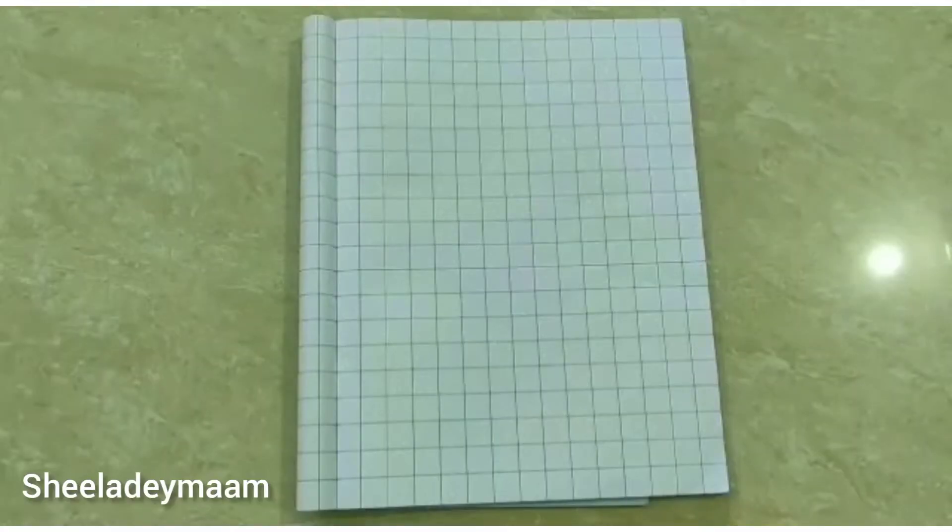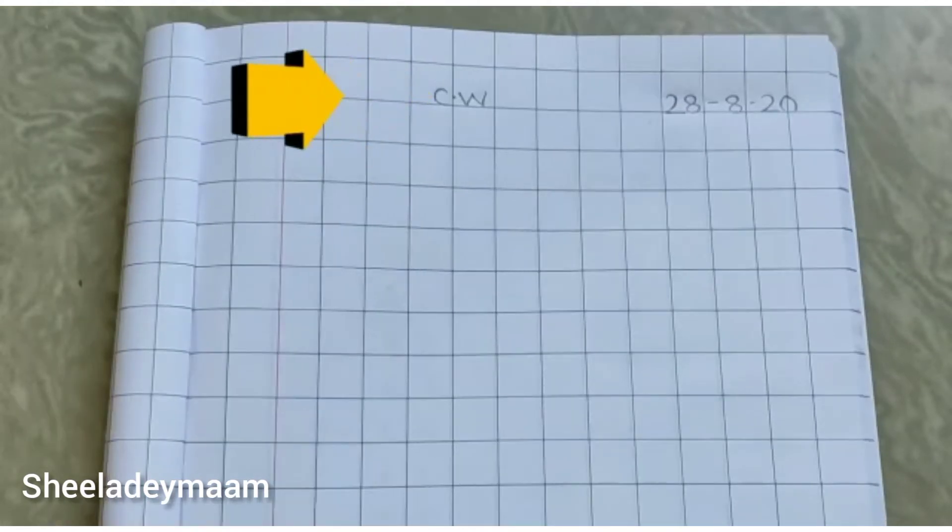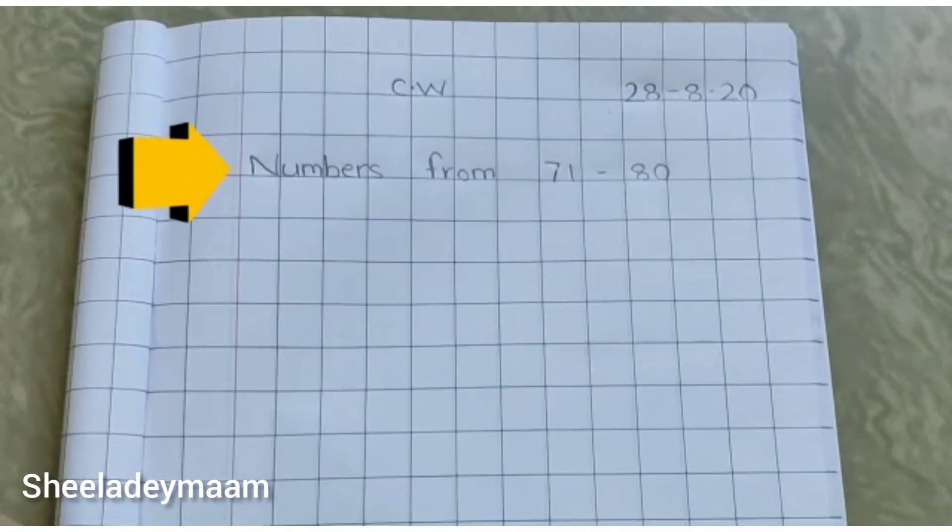So children, this is our maths class for copy. At first, you have to write today's date on the top, and after that write CW classwork, and then write the heading: Numbers from 71 to 80.